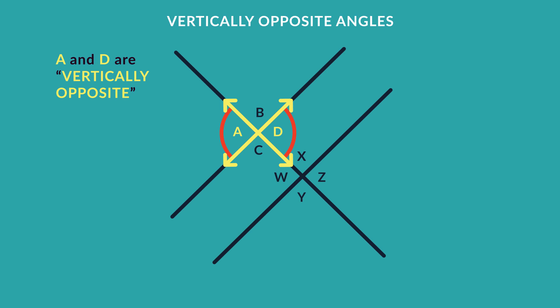Vertically opposite angles are always equal to each other. So if you know that angle A is equal to 100 degrees, you know straight away that angle D is also equal to 100 degrees.